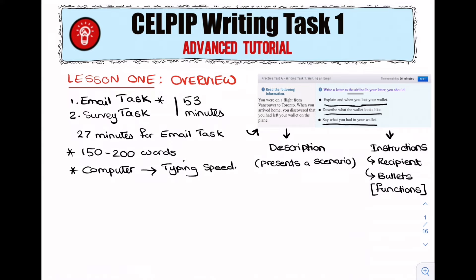One of the questions I often get is: how is CELPIP writing scored? In CELPIP, you're going to be graded based on four criteria. The first one is called content and coherence. The examiner will look for whether you have covered all of the bullets, whether your ideas are well organized, and whether you have provided examples and supporting details and how neatly these ideas have been sequenced.